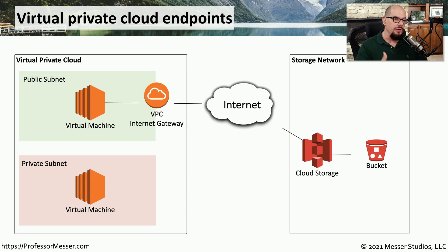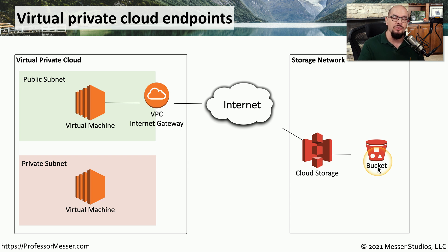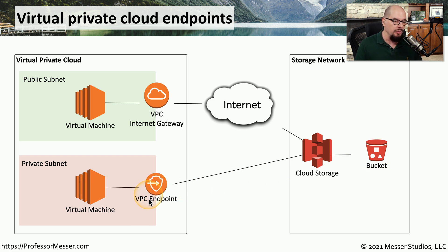Here's an example of using a VPC endpoint. We've created a virtual machine in a private subnet within a virtual private cloud on one provider. On a different cloud provider, we have a separate storage network and a bucket, which is a resource containing our files. We need some way to connect this virtual machine to this bucket. To do that, we would add a virtual private cloud endpoint, which would then connect to the cloud storage on that separate storage network provider.